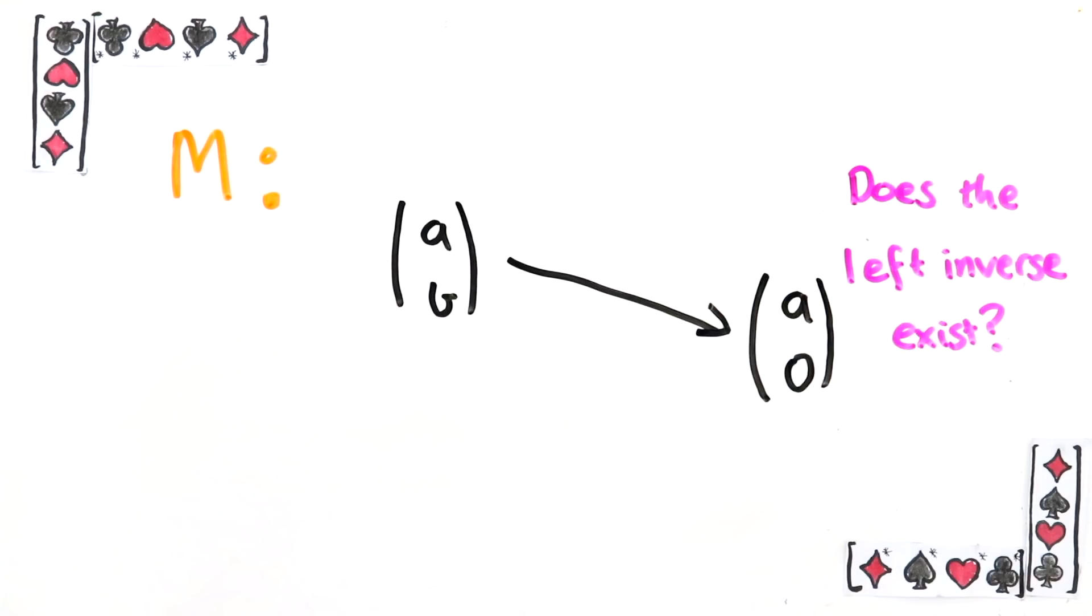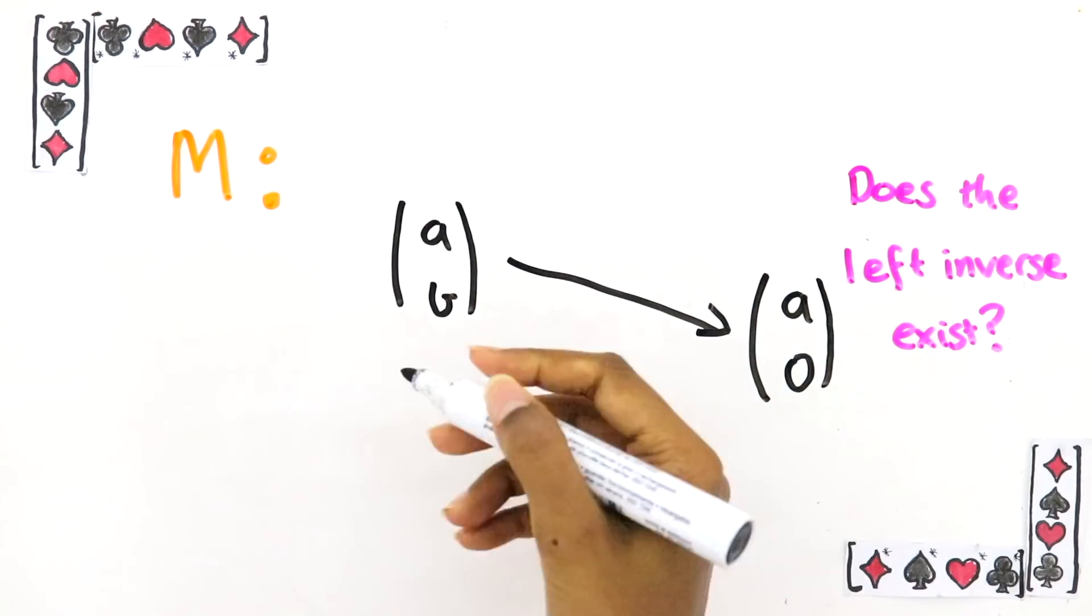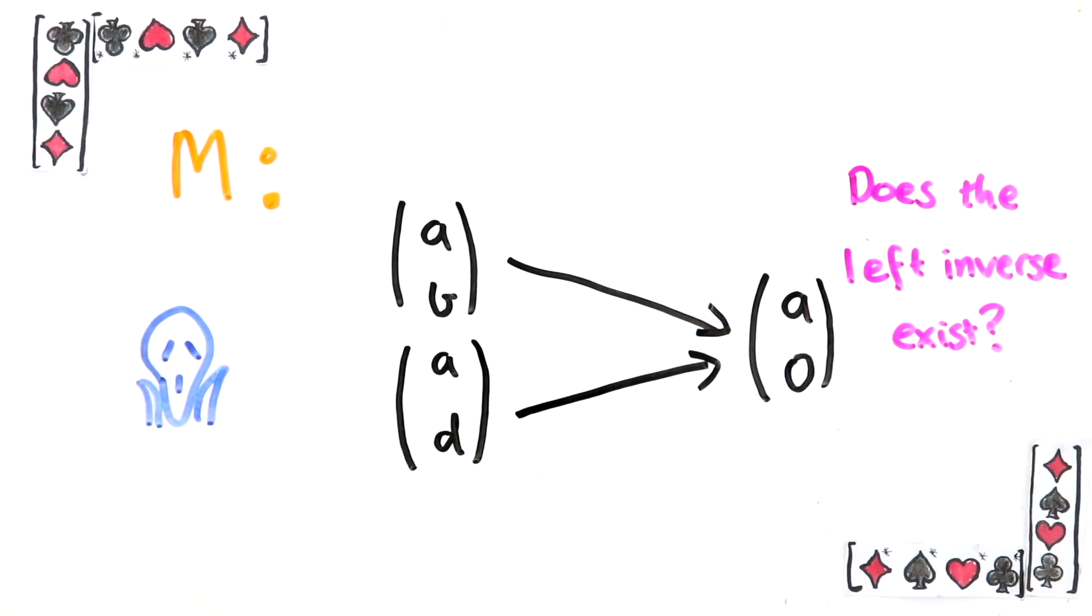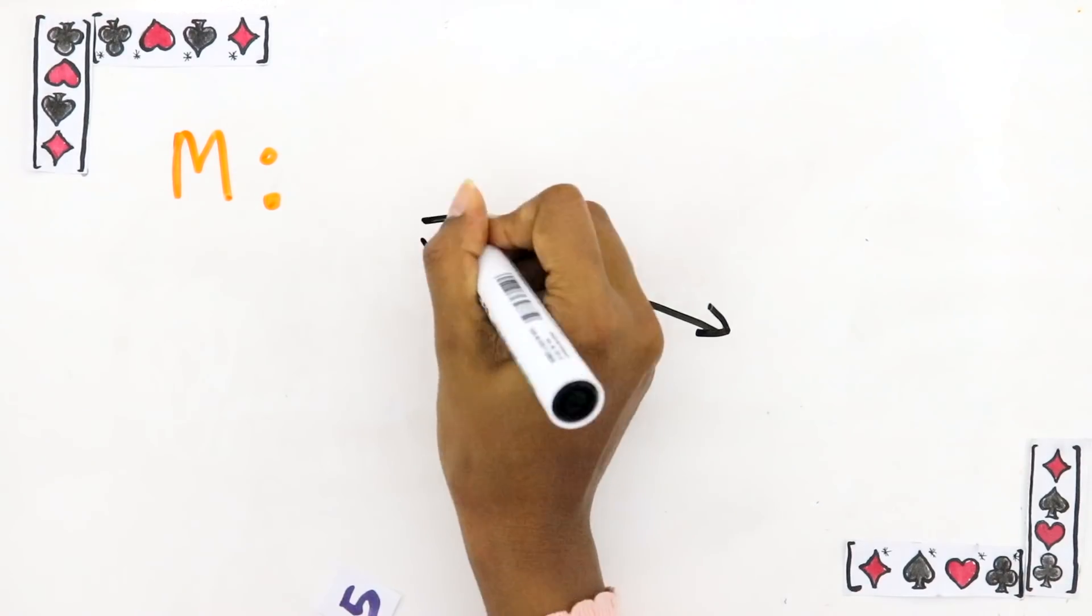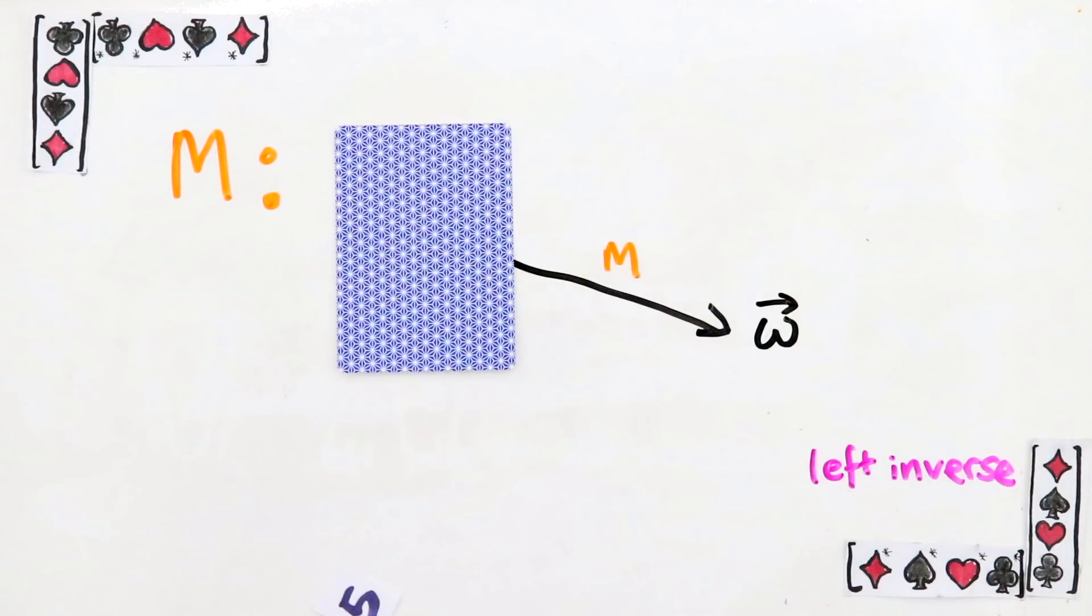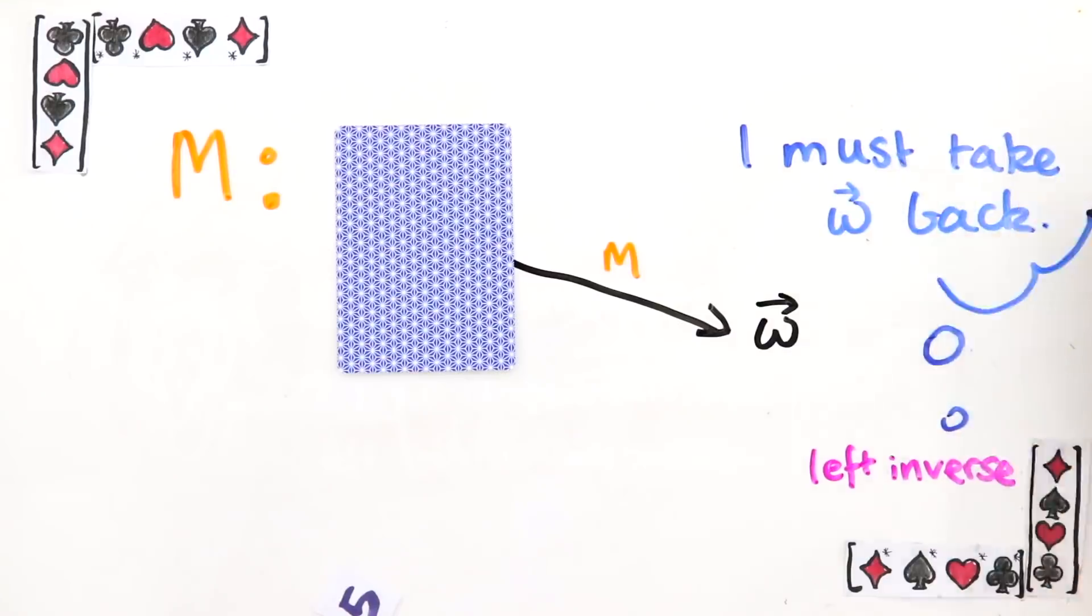Notice something about this matrix. It takes the vector AB to A0, but it also takes AD to A0 as well. This is a bad thing, and it's because of this that the left inverse doesn't exist. Why? Well, say you have some vector V and M takes it to W. The left inverse of M, if it exists, knows M and what W is, but it doesn't know what the vector that produced W was. Just using the information given, it needs to find out what the original vector was so that it can take W back to where it came from.